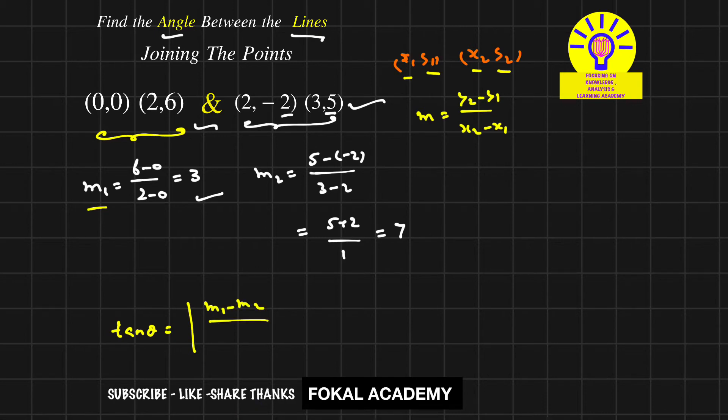Now substitute: we get the angle between two lines as tan θ = |3 - 7|/(1 + 3 × 7). That equals tan θ = (3 - 7)/(1 + 21) = -4/22 under modulus.